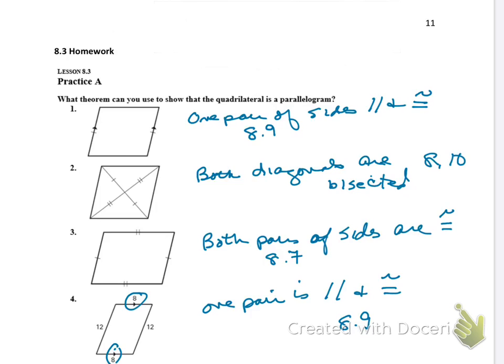The third one, both pairs of sides are congruent, that's theorem 8.7. The fourth one, one pair is parallel and congruent, that is 8.9.